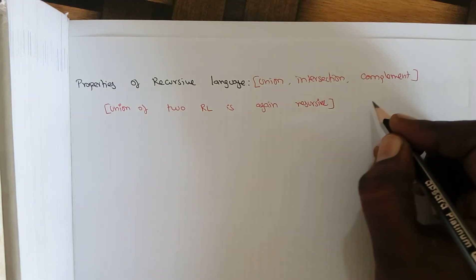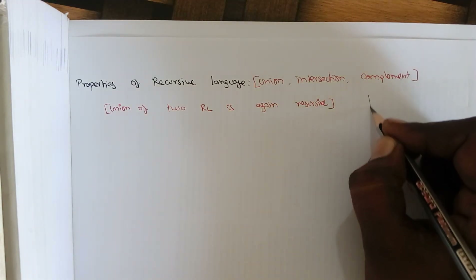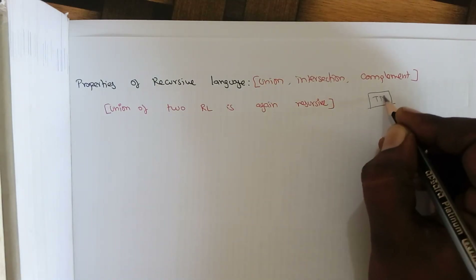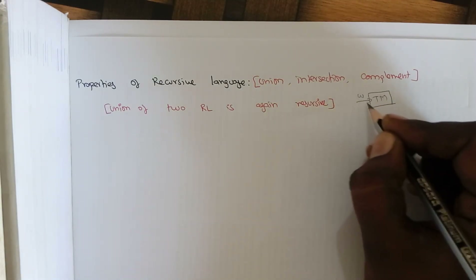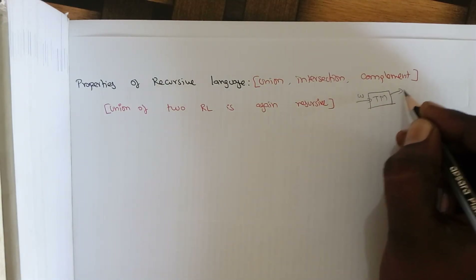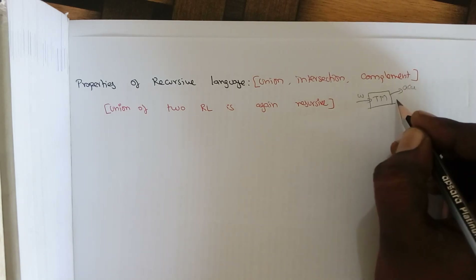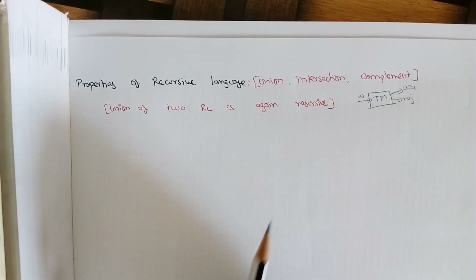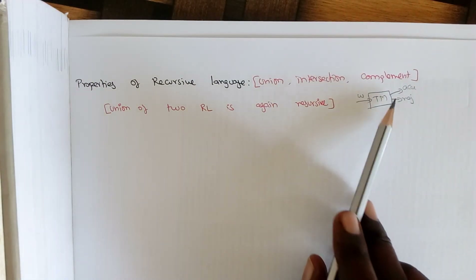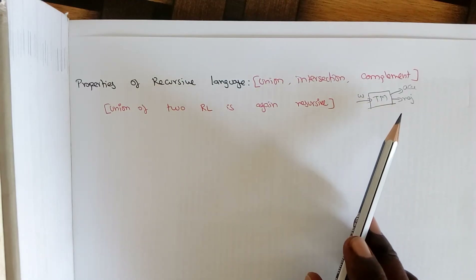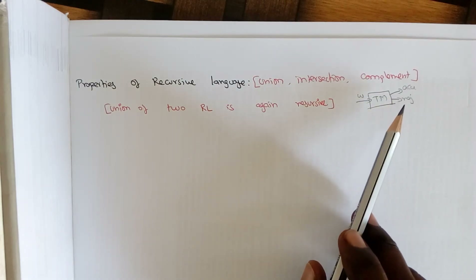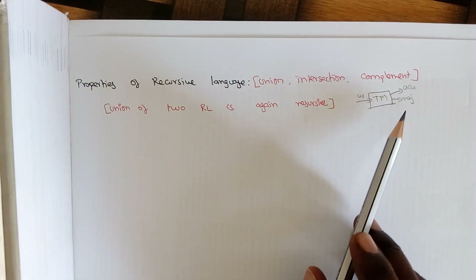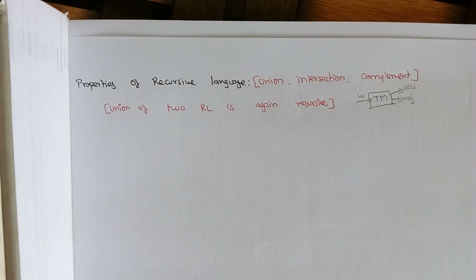Whenever it is a recursive language, we can construct a Turing machine for it. When you give an input, if the input belongs to the language, the machine accepts; if the input doesn't belong to the language, the machine properly rejects. When acceptance and rejection states are properly defined, we call the language a recursive language — the Turing machine will always halt and either accept or reject it.